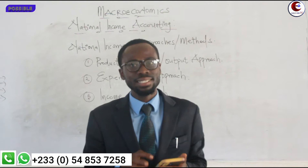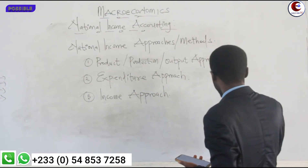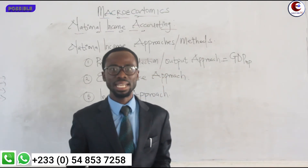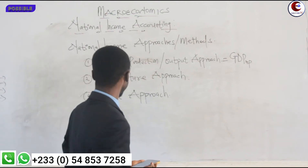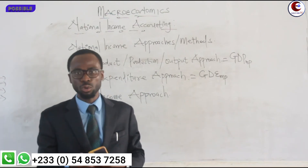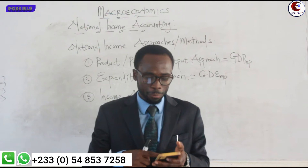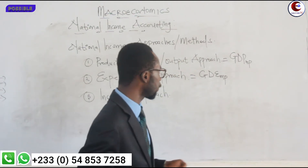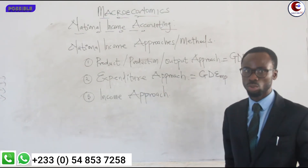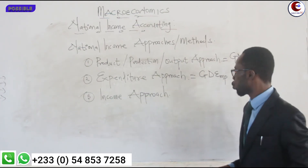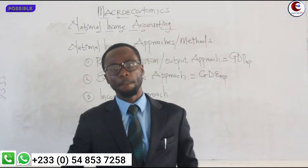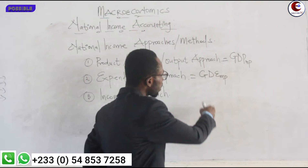The product approach gives us GDP at market price. For the expenditure approach, we get gross domestic expenditure. Notwithstanding, I have told you that all of them will give you the same answer, so please don't be confused. Under the expenditure approach — and this is the easy one — the expenditure items are consumption, investment, government expenditure, and exports minus imports. You put all of them together and get gross domestic expenditure.